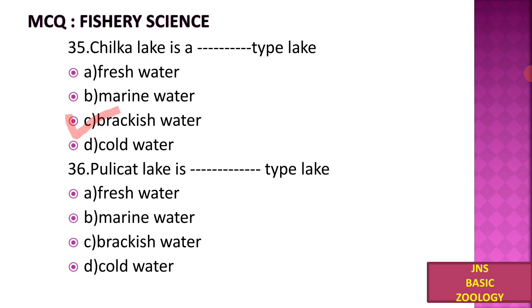Next, Pulicat Lake is also which type of lake? A) Freshwater, B) Marine water, C) Brackish water, D) Cold water. Pulicat Lake is the second largest brackish water lake after Chilka Lake.